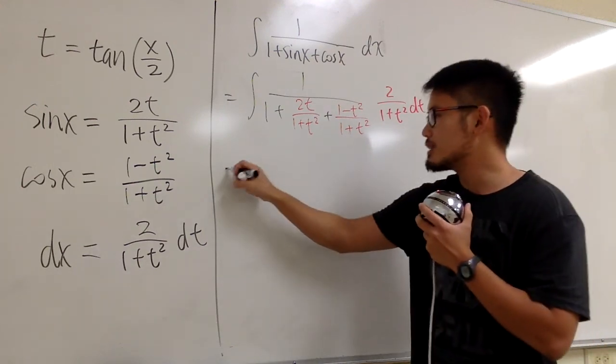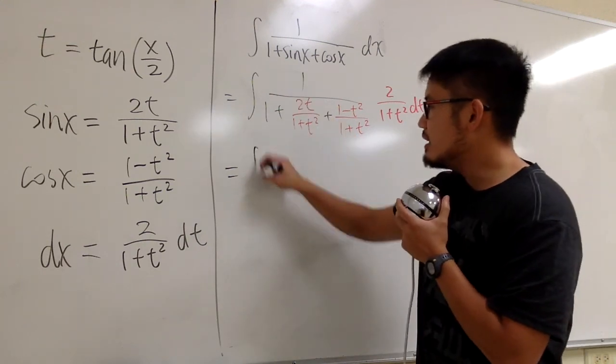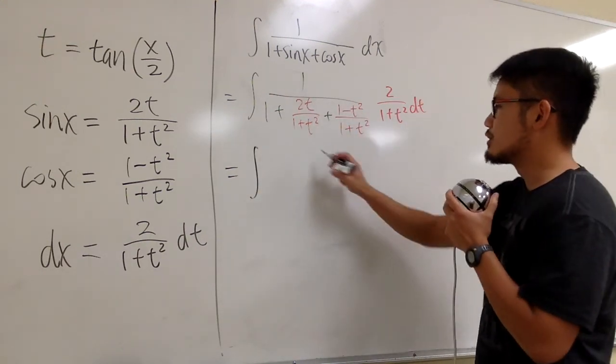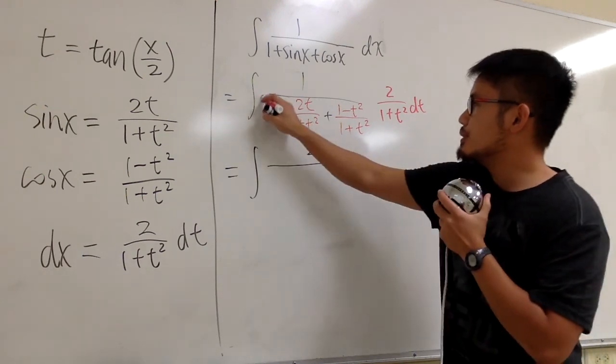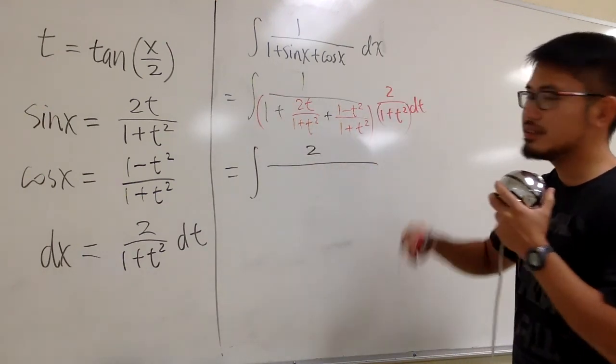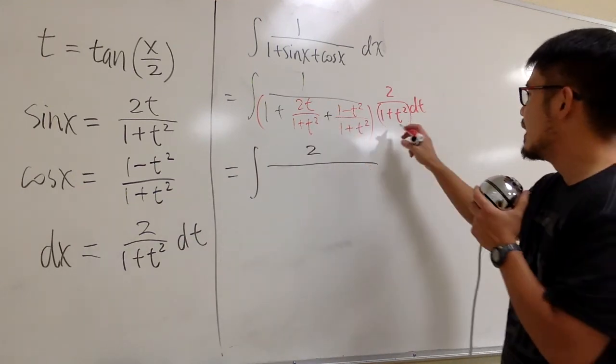And now we just have to simplify this a little bit before we can actually integrate. We have the integral 1 times 2, let's just put 2 on the top. Let's put this in the parentheses and this in the parentheses because we have to take this and distribute.